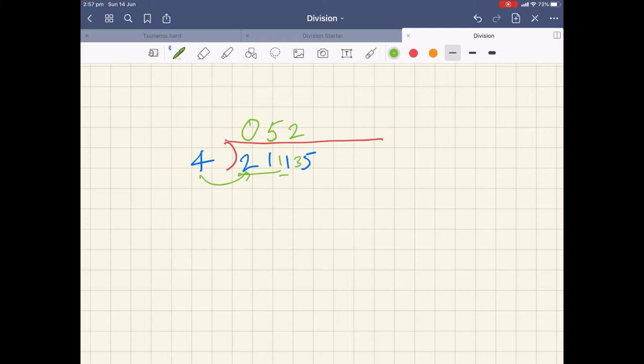And now we do 4 into 35. Pity it's not 36, because that would have been super handy, but it's not. It's 35. 4 into 35 goes 8 times. 4 eights are 32. The number is 35. So what's left over? 3 is left over, and we express that as a fraction.